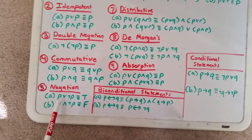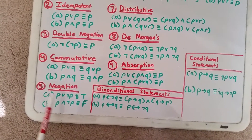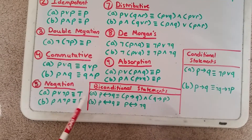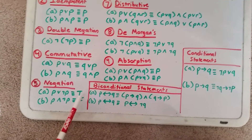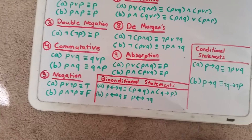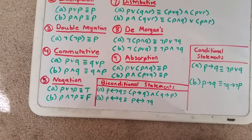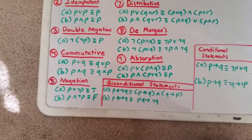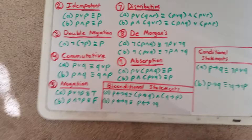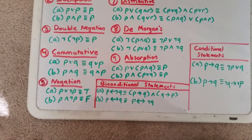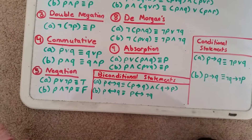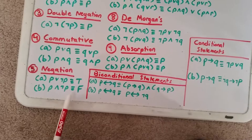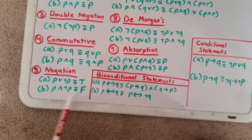Then you have the negation law. If you have P or not P, then your overall statement is logically true — that's something like saying either we're going to go outside or we're not going to go outside, which is always a true statement. And P and not P is always logically false.